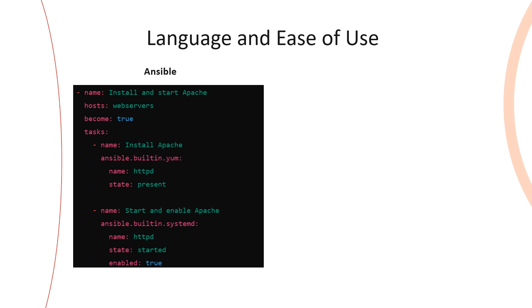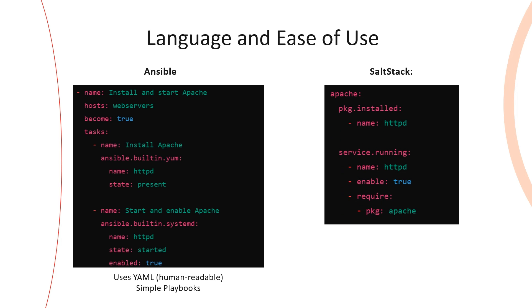Now let's talk about how easy these tools are to use. Ansible uses YAML, which is a human-readable language, making it beginner-friendly. You can describe your infrastructure in simple YAML files known as playbooks, and Ansible will take care of the rest. SaltStack also uses YAML, but with a more detailed approach called SLS. While SaltStack can be a bit more complex to learn initially, it offers a lot of power and flexibility, and you can perform complex orchestration tasks and take advantage of its event-driven architecture.